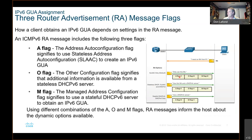Here the O flag and A flag are set, meaning some of it's going to be automatic and some of it is going to be other — you're going to get that from the router. And then with the managed flag, only the M is set because none of it is automatic.